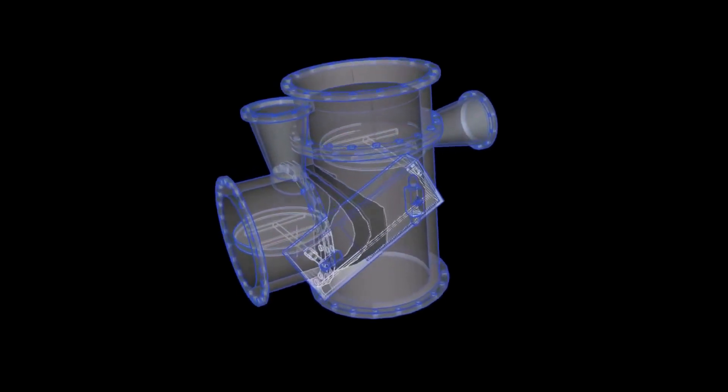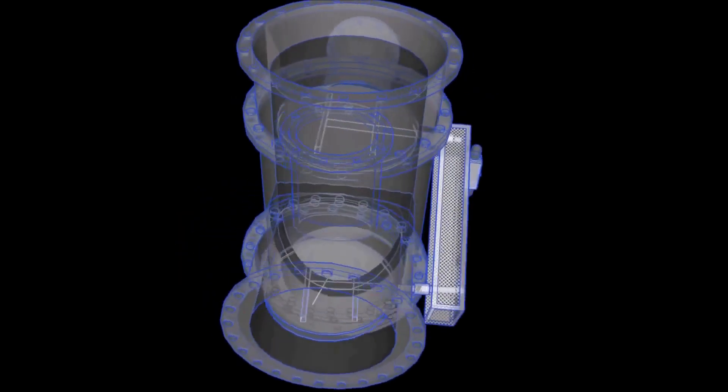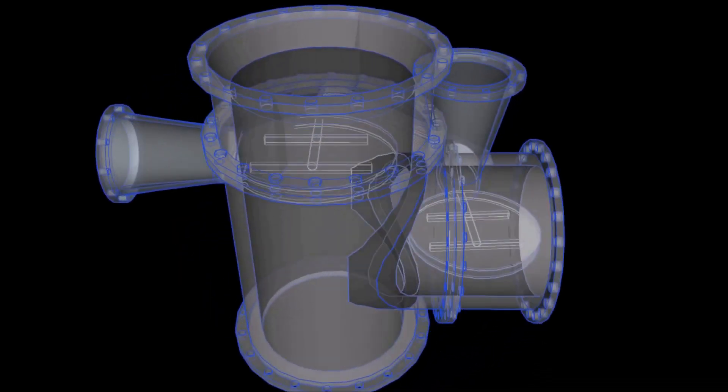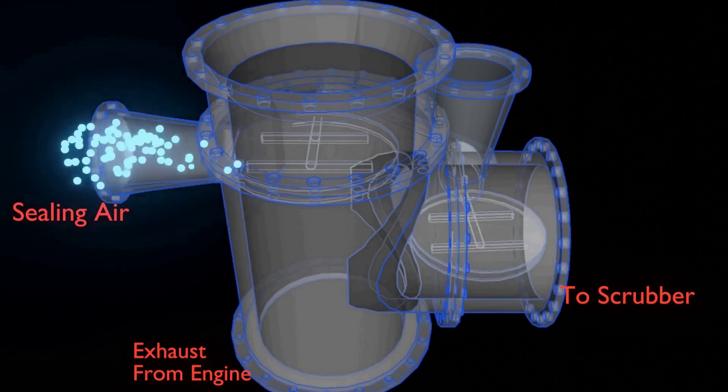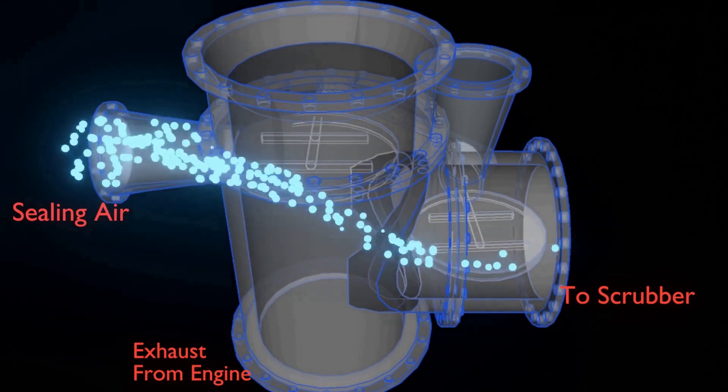Likewise, when the system is stopped, it prevents the exhaust gas from flowing inside the scrubber. A sealing air is provided to ensure that exhaust gas is going in the right direction.